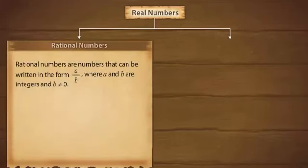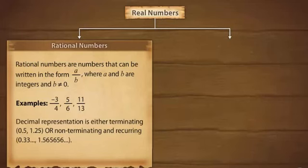Rational numbers are numbers that can be written in the form A by B where A and B are integers and B is not equal to zero. Their decimal representation is either terminating or non-terminating and recurring.